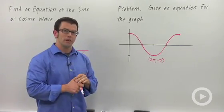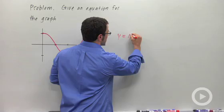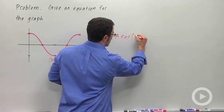So I'm going to guess that this is some kind of transformed cosine curve with an equation of the form y equals a cosine bx.